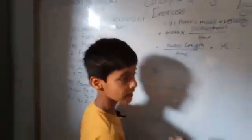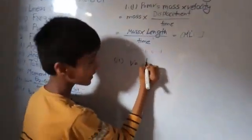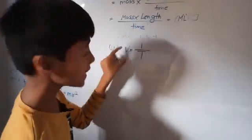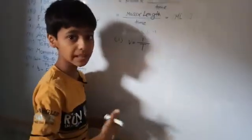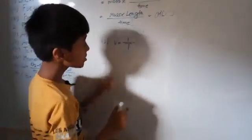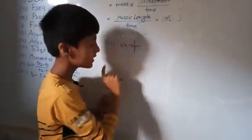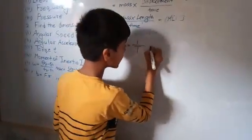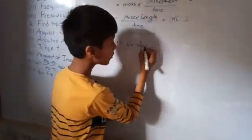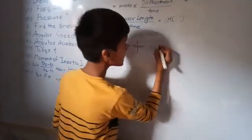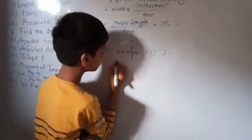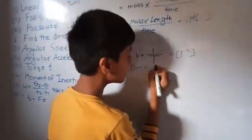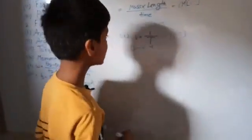Next is frequency. We have studied that v equals 1 divided by T, where 1 is a pure number and T is the time period. Since all pure numbers are dimensionless, we neglect the 1. Bringing T to the numerator, with power one, it becomes T power minus one. The dimensional formula is [T⁻¹] and the dimension is minus one only.